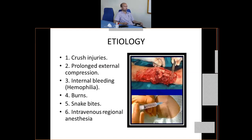Other causes of compartment syndrome leading to VIC include crash injuries, prolonged external compression, internal bleeding, burns, snake bites, and intravenous regional anesthesia. These are uncommon causes. The most common cause remains supracondylar fracture.